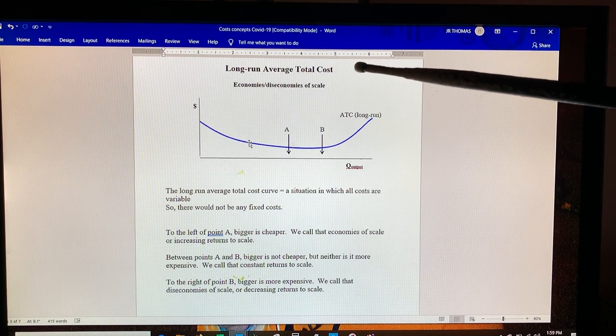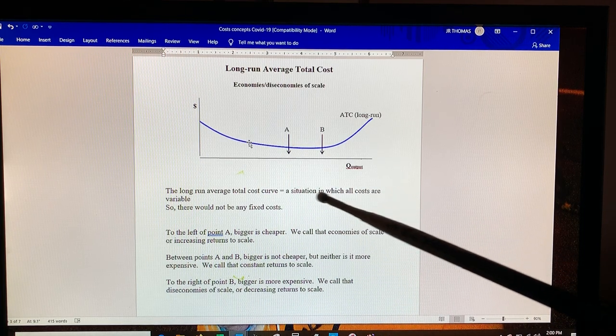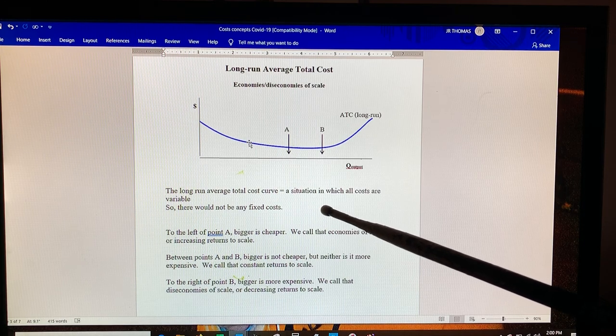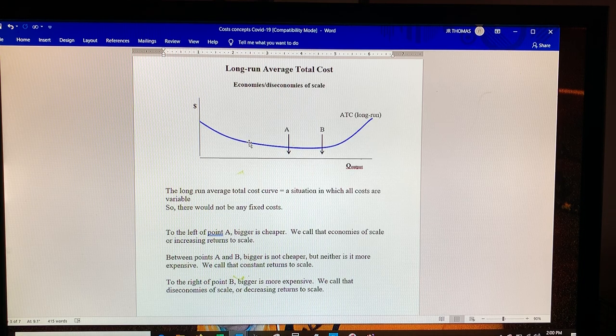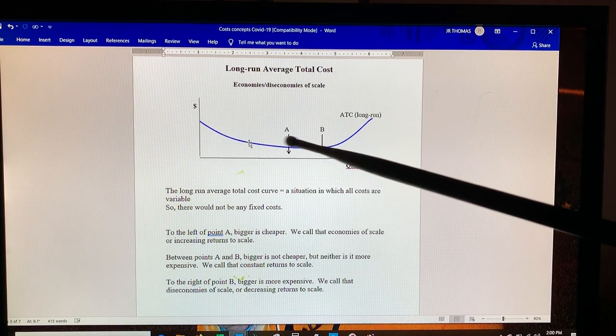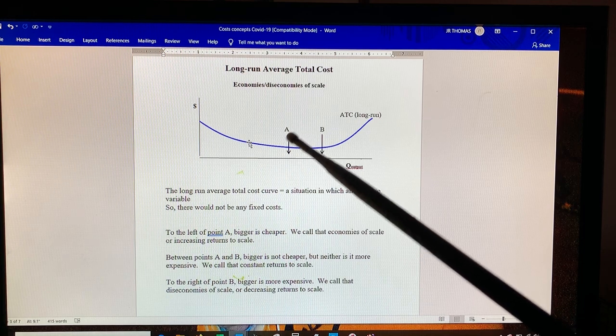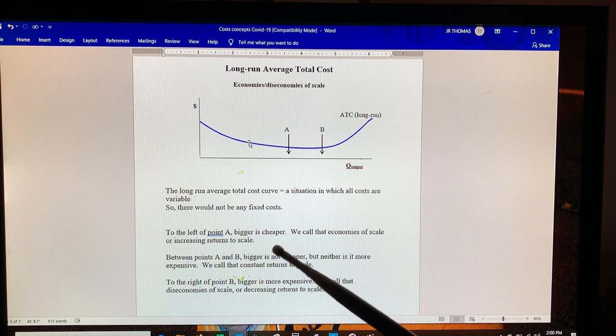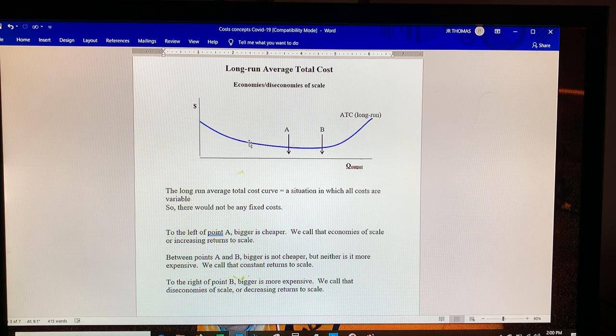Here in the long run is your average total cost. That's a situation in which all costs are variable—there wouldn't be any fixed costs at all. If we average your total cost in a situation like that, a lot of the time you'll see sort of a bowl effect. The downward sloping part of the bowl, to the left of point A, is the point where bigger is basically cheaper. We call that economies of scale. Another phrase for it is increasing returns to scale.